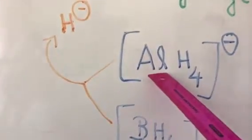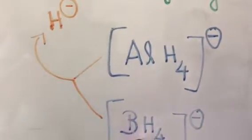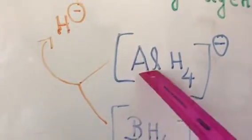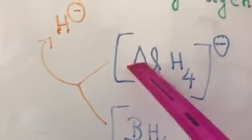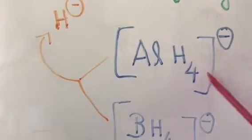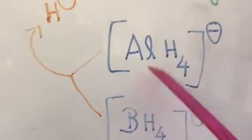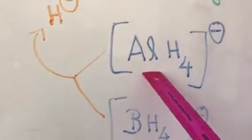Aluminium, being a metal and the second member of the third A group, has comparatively lower electron affinity. Therefore it tends to release the hydride ions, and those released hydride ions eventually go on to reduce the aldehydes and ketones.